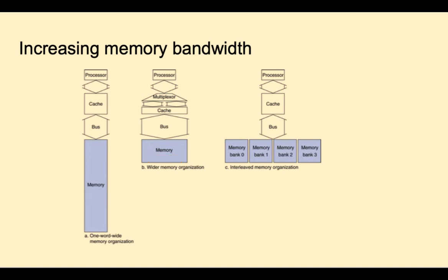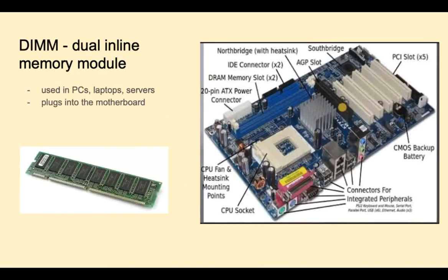Also, interleaving many banks can make for faster access, so that data from different banks can be read or written at the same time. Here we see the DEM dual inline memory module chip that would plug into the motherboard.